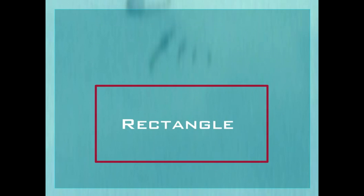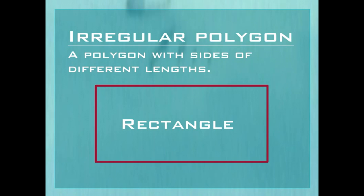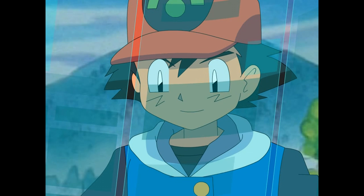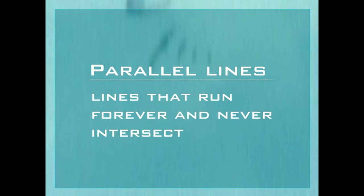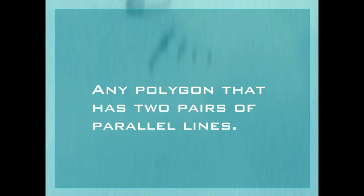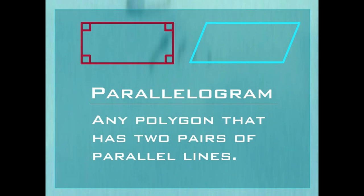Now look at these two polygons. I know that first one is a rectangle! See how its sides are different lengths? That makes the rectangle an irregular polygon, same with the other figure. But these polygons have something else in common too: both have four sides made of line segments. Now imagine that these line segments actually didn't stop at their vertices — they keep running forever. Would they ever intersect? No! They're parallel lines — lines that run forever and never intersect. The rectangle has two pairs of parallel lines. Any polygon that has two pairs of parallel lines is a parallelogram. A rectangle is a parallelogram that has all right angles.